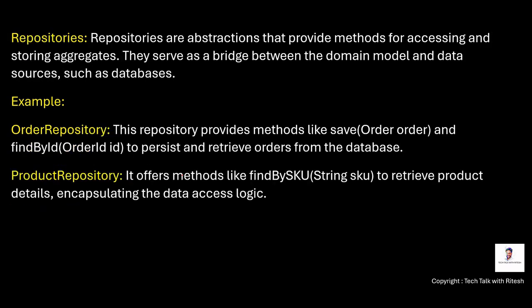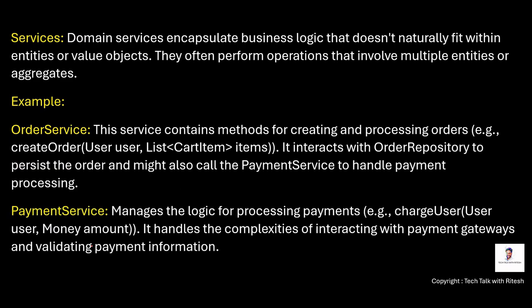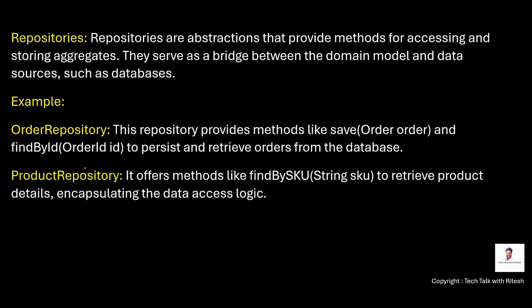Another key concept is repositories. Repositories are abstractions that provide methods for accessing and storing aggregates — for example, order aggregate has an order repository, and product aggregate has a product repository. They serve as a bridge between the domain model and data sources such as databases. The order repository provides methods like save order and find order by ID to persist and retrieve orders. The product repository offers methods like find by SKU to retrieve product details, encapsulating the data access logic.